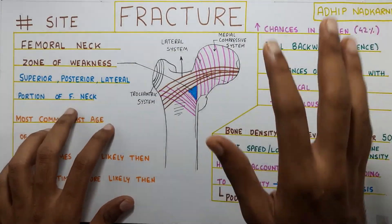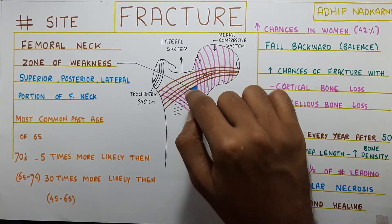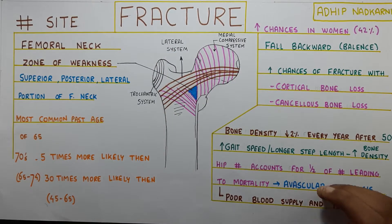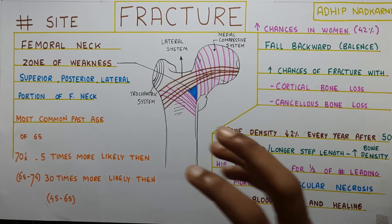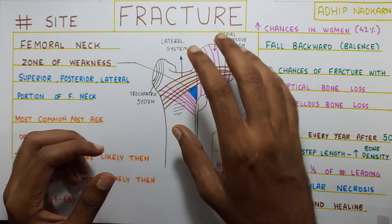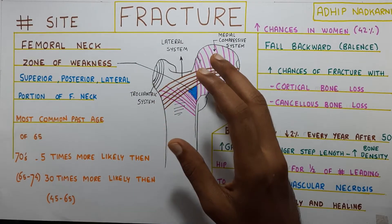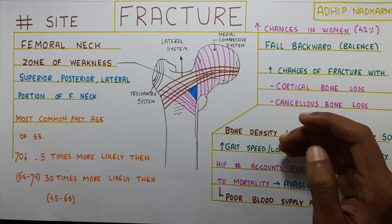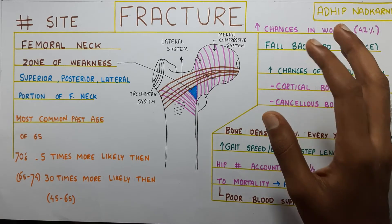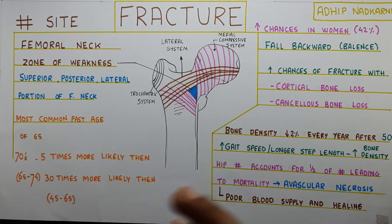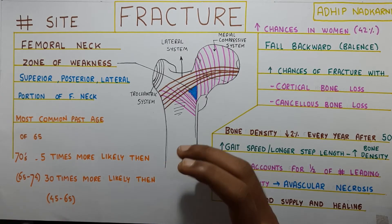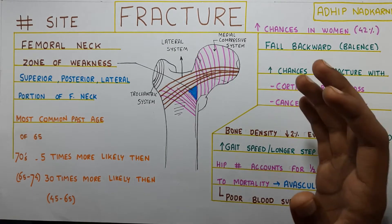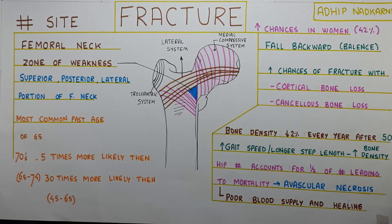To summarize: we saw the zone of weakness at the neck of the femur as a very common fracture site, and that avascular necrosis can occur there because of the synovial fluid and poor blood supply. We also saw how age is a big factor — after the age of 50, bone density reduces by 2% every year, which is even more magnified in women. The age group of 65 to 74 is highly prone to fracture, often due to loss of balance and falling backward, causing fracture mostly at the neck of the femur.